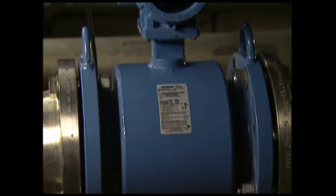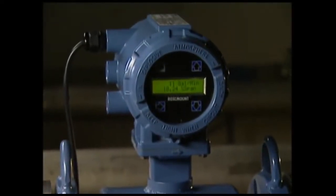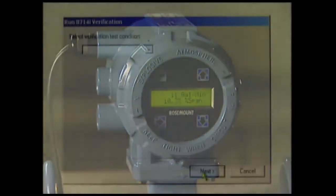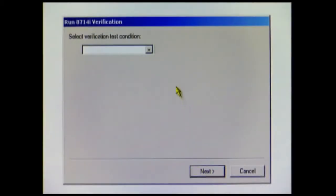Rosemount E-Series Magnetic Flow Meters are available with the patented 8714I calibration verification diagnostic. This allows you to verify the entire meter calibration without removing it from the line or buying extra equipment.